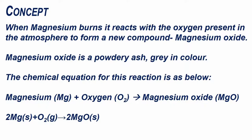When magnesium burns, it reacts with the oxygen present in the atmosphere to form a new compound, magnesium oxide. Magnesium oxide is a powdery ash gray in color.